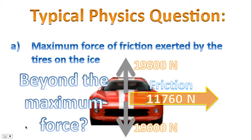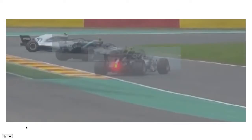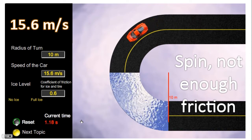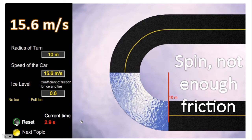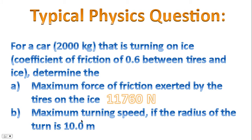Beyond the maximum force, the car can no longer turn. When a car exceeds the maximum force of friction, the car ends up spinning out — we also saw this in the simulation where the car spins out. So our maximum force of friction is 11,760 newtons.